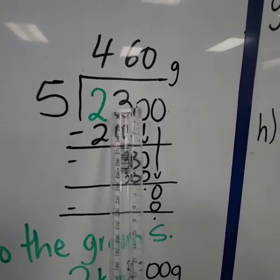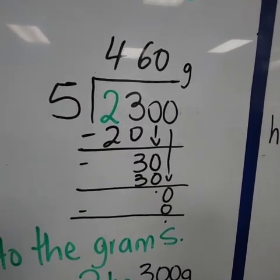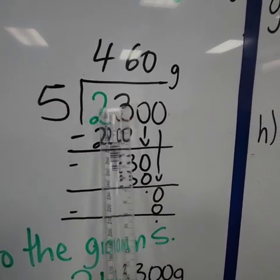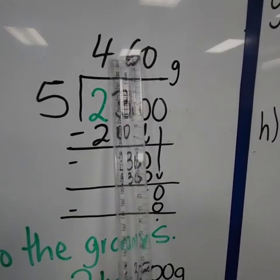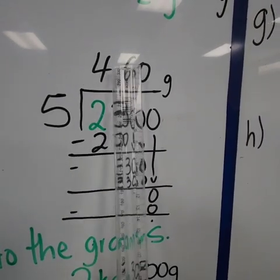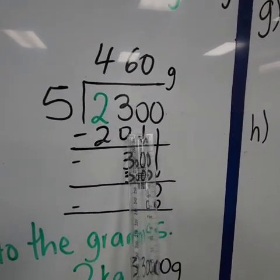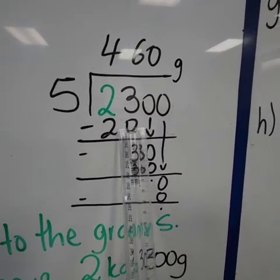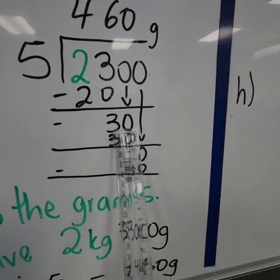We say, can 5 go into 2? Obviously, it can't. Can 5 go into 23? Yes, it goes 4 times. Then 5 times 4 gives us 20. Then 23 subtract 20 will give us 3.